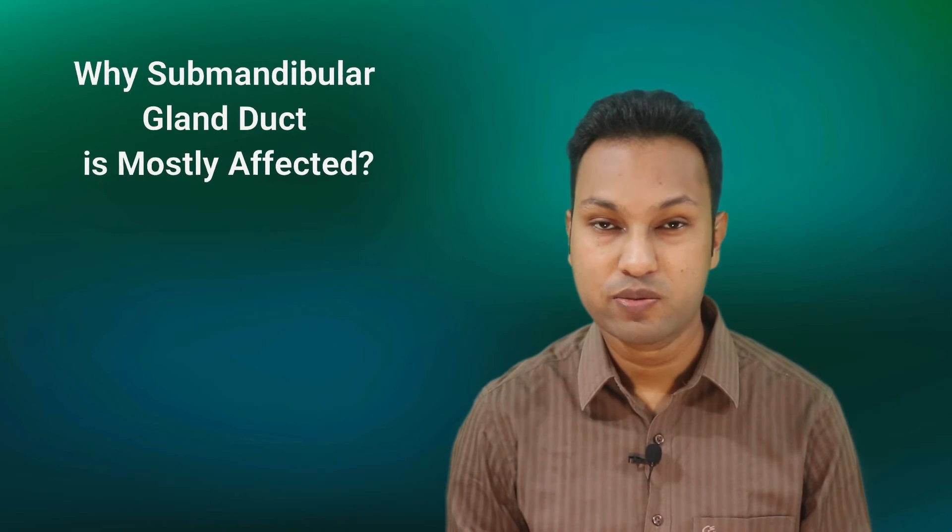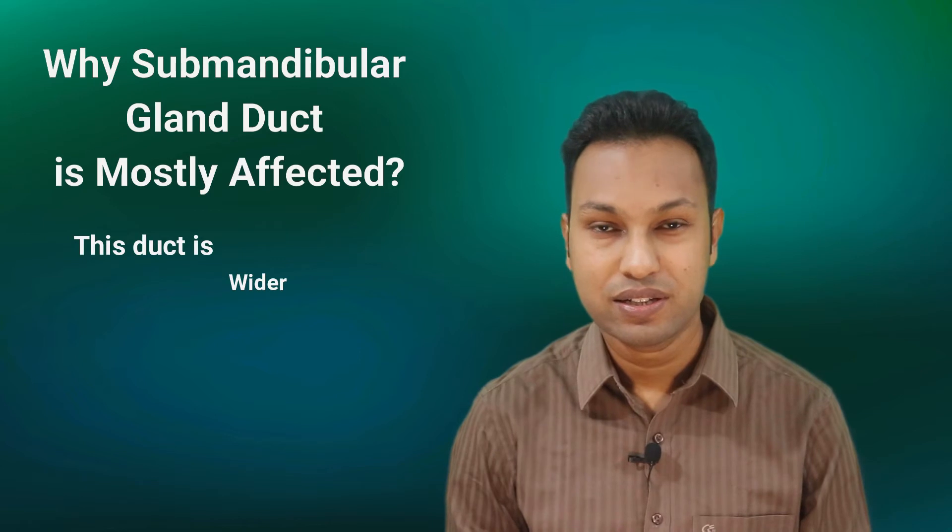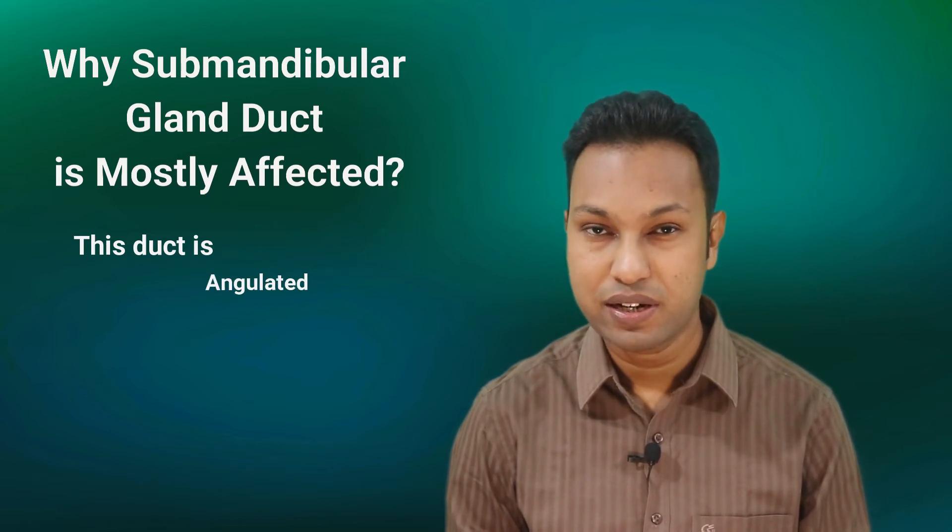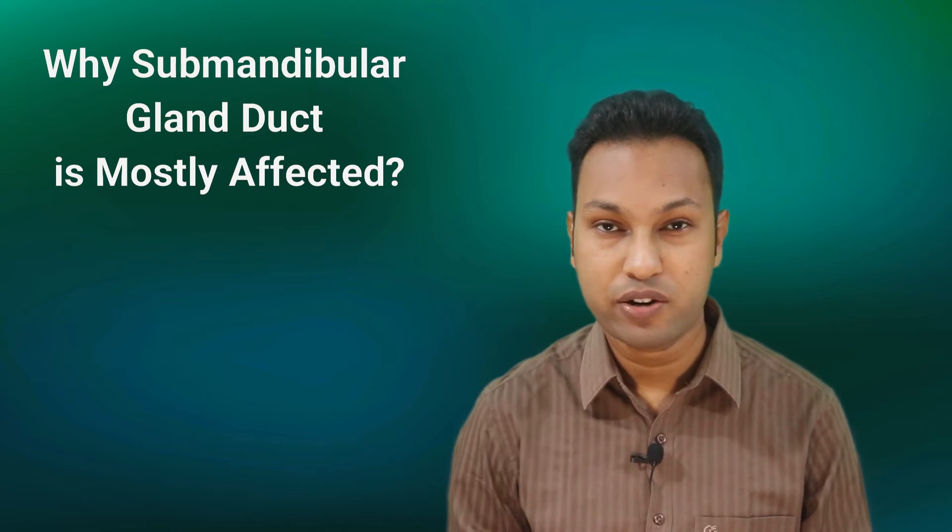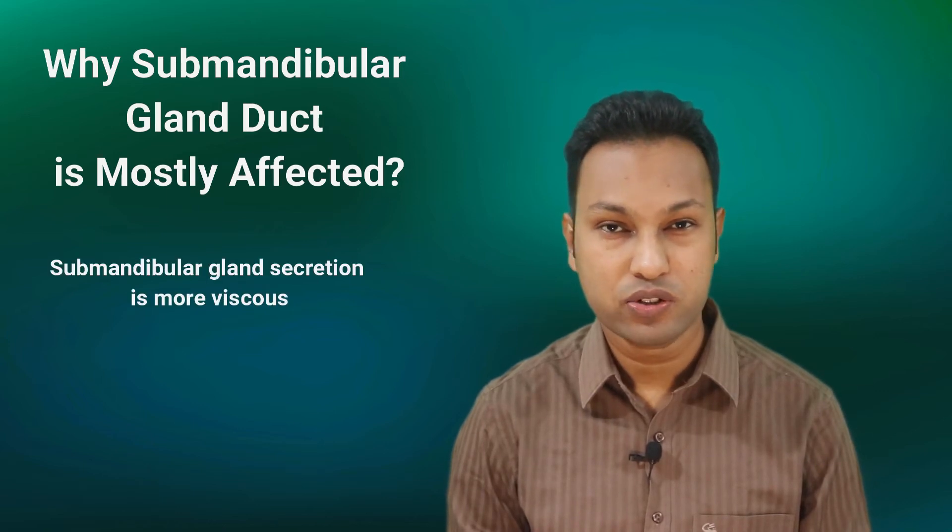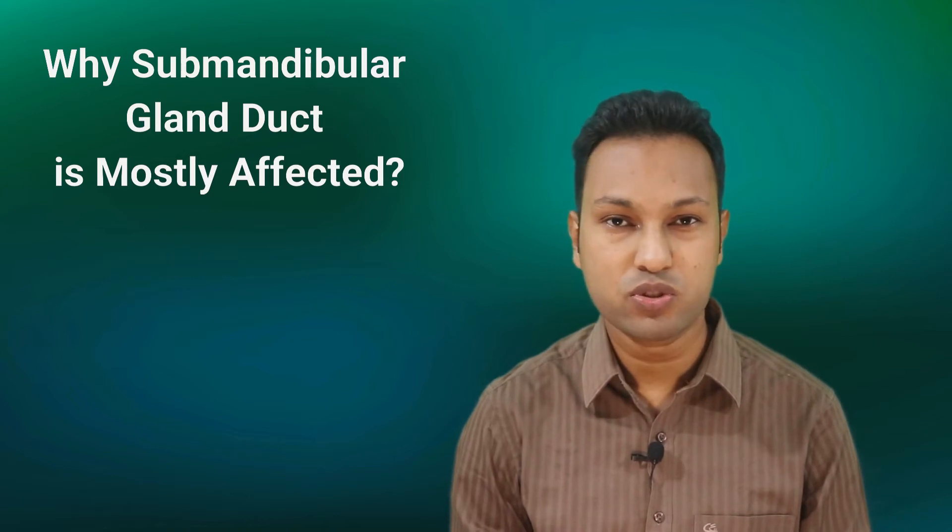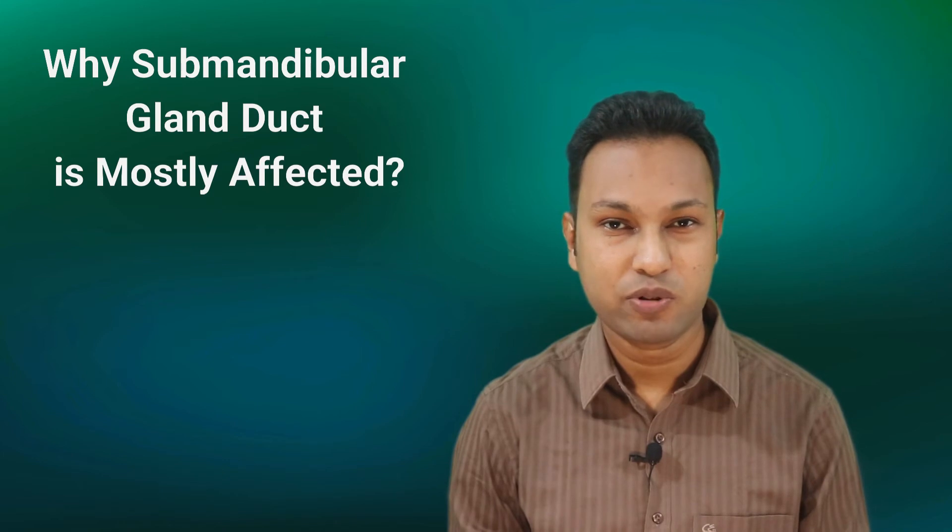I have mentioned earlier that 90% of stones are in submandibular salivary gland duct or Wharton ducts. So why is this Wharton duct more vulnerable to the formation of stone? This is because Wharton duct is longer, Wharton duct is wider, it is angulated against the gravity at its crossing point at the mylohyoid muscle. Another reason is submandibular gland secretion is more viscous because it contains higher amount of mucin, higher amount of alkaline content, higher amount of calcium and phosphate concentration.